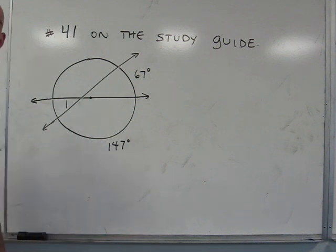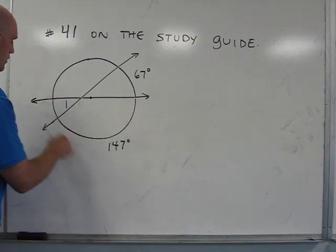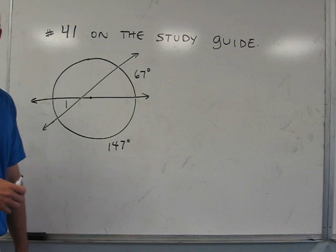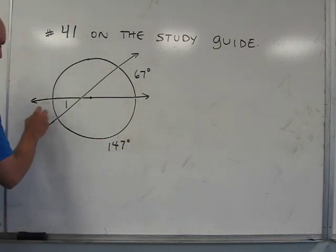We know that from previous knowledge, half of a circle is 180 degrees. So, if this part is 147, that makes this remaining part 33 degrees.